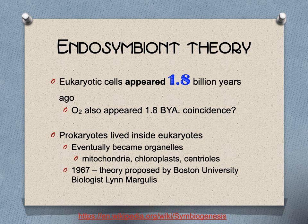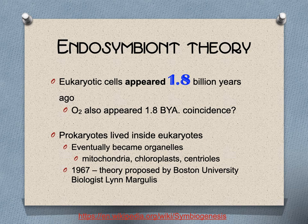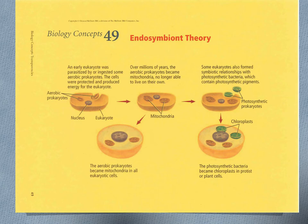Remnants of these are shown by the endosymbiont theory. There is no coincidence that eukaryotes appeared 1.8 billion years ago and oxygen also appeared 1.8 billion years ago — eukaryote evolution is definitely tied to the amount of free oxygen in the atmosphere. The endosymbiont theory states that prokaryotes lived inside eukaryotes and eventually became organelles such as mitochondria, chloroplasts, and centrioles. This was presented in 1967 by Boston University biologist Lynn Margulis.